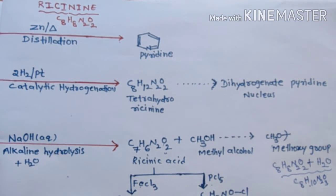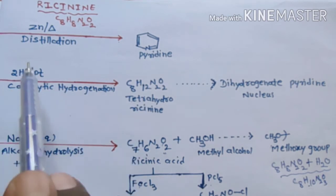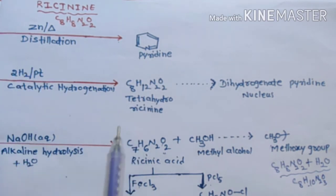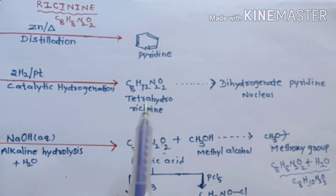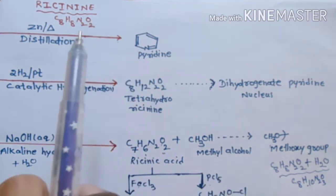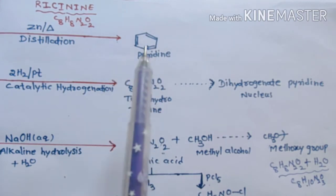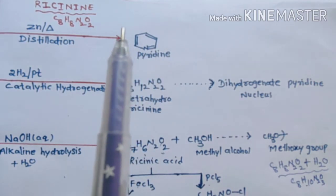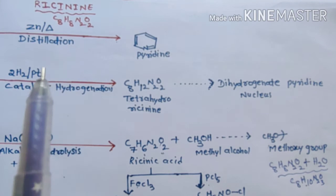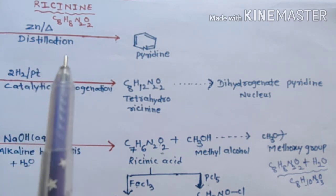When ricinine is subjected to catalytic hydrogenation, it takes up two molecules of hydrogen and gives tetrahydroricinine. If ricinine contained a pyridine nucleus as it is, it should take up three hydrogen molecules, but here it is taking only two molecules of hydrogen.